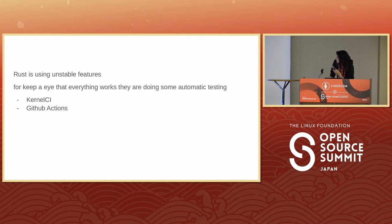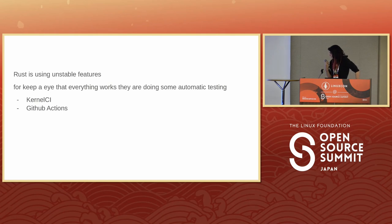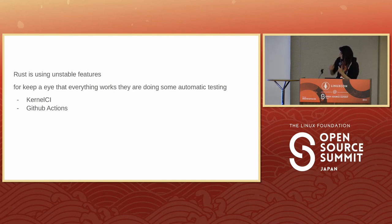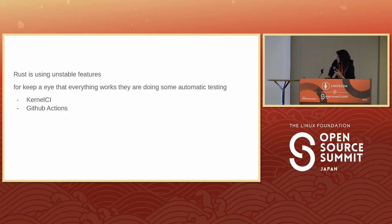Currently Rust for Linux uses two main systems for checking every patch: one is KernelCI and the other is GitHub Actions. GitHub Actions recently deprecated the Rust branch in favor of rust-next, and KernelCI also recently deprecated the Rust branch.